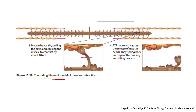After the crossbridge forms and contraction occurs, ATP is hydrolyzed — broken down — in the muscle, and this causes the release of myosin from actin. Myosin heads detach and then the cycle continues again. Contraction is not sustained; it happens, then the muscles relax, then contract again, and this goes on and on. That is muscle contraction in a nutshell.